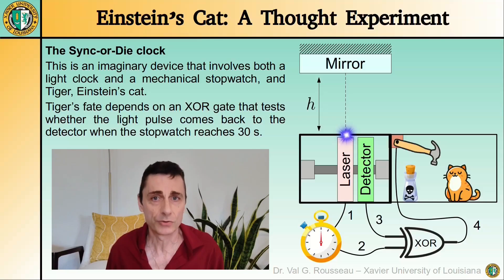even slightly, a poison mechanism is triggered and poor Tiger, Einstein's Cat, doesn't make it.